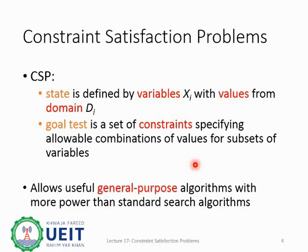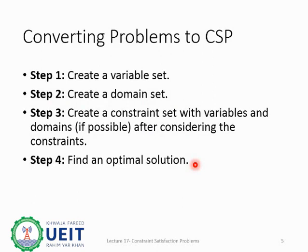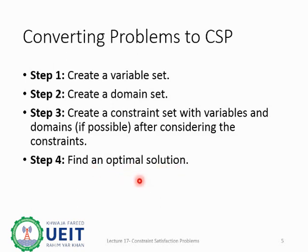CSP technique is more powerful and effective than standard search algorithms that we have studied so far. These are the steps we have to follow while solving a CSP problem. A step-wise approach has been provided to make the task of solving CSPs easier. Start by extracting variables from the problem and creating a variable set X. Next, extract the domain — the allowable values for variables — and define domain set D. Then create constraint set C by writing down all the rules the problem defines. Finally, look for possible variable assignments using domain values that satisfy the constraint set.